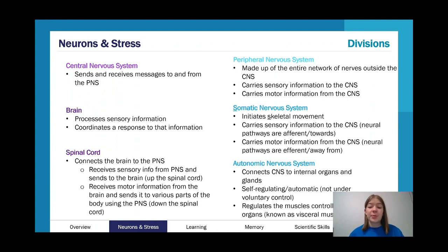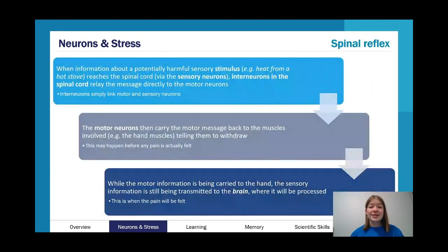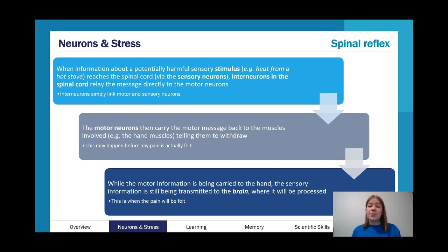When looking at sympathetic and parasympathetic, make sure you know a few different examples so you can pick out in multiple choice what's going to be prioritized when each is dominant. The spinal reflex is something students often misplace. Because you're moving your arm away using skeletal muscles, your somatic nervous system is involved — your autonomic nervous system is not.